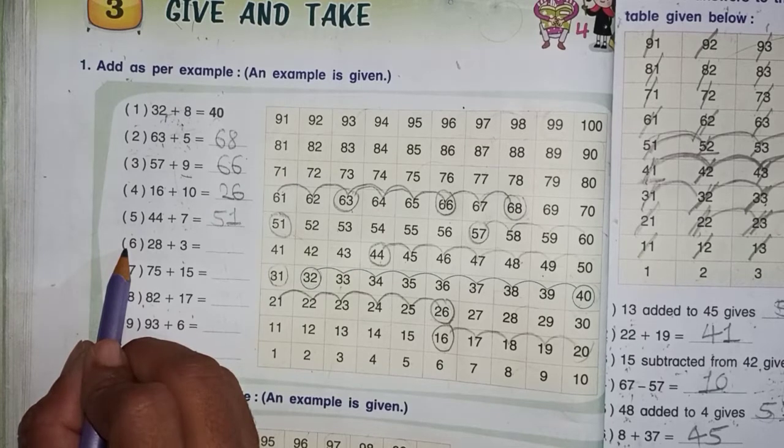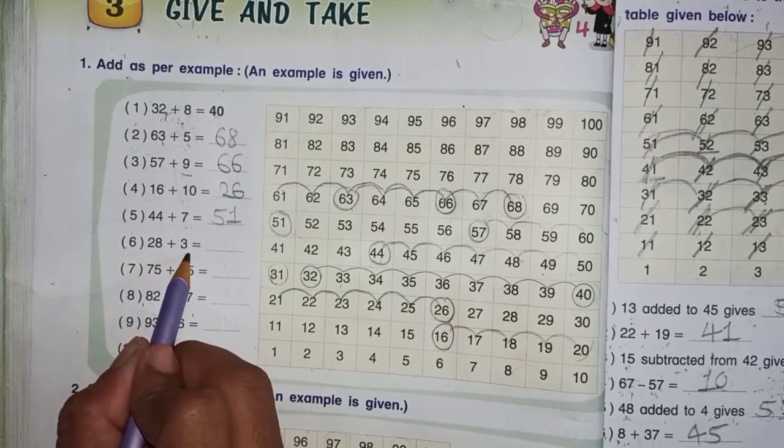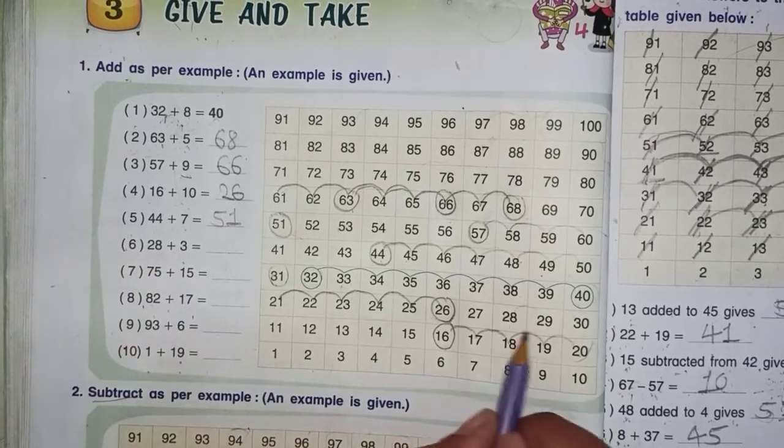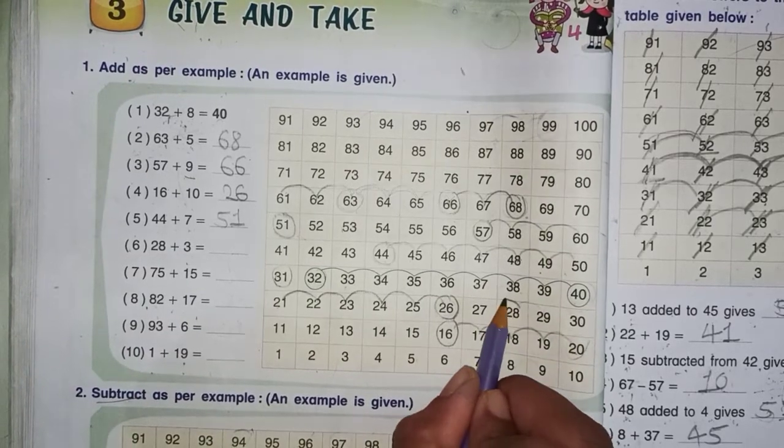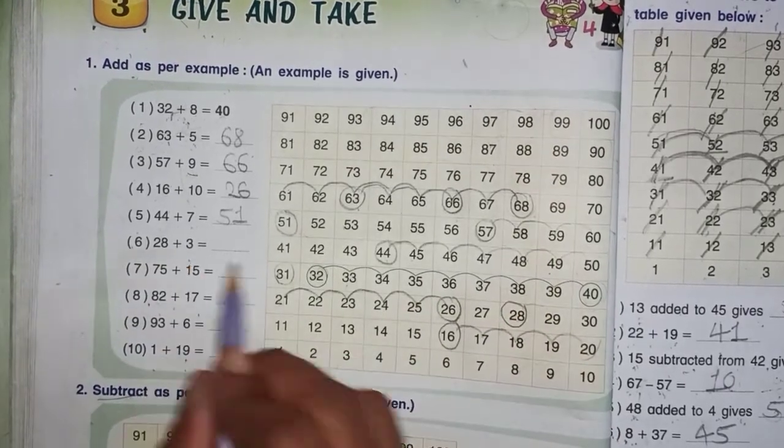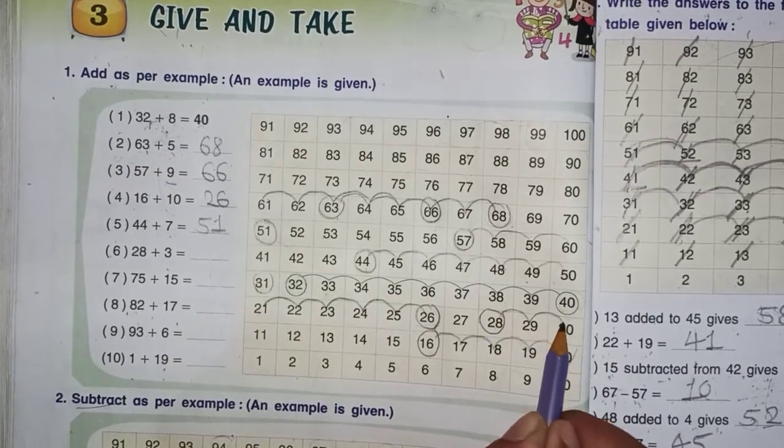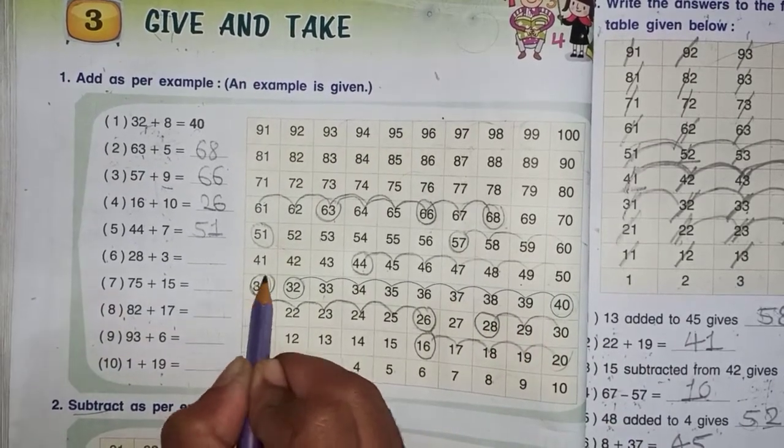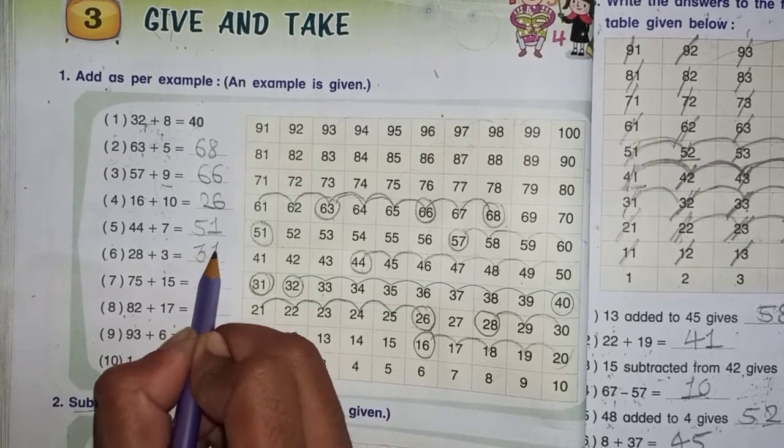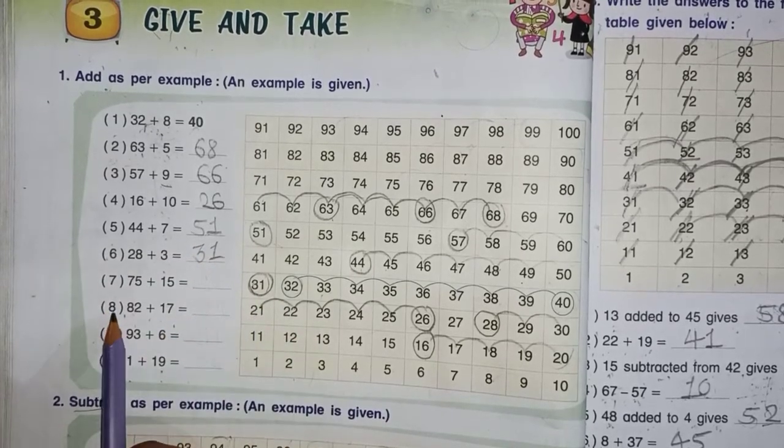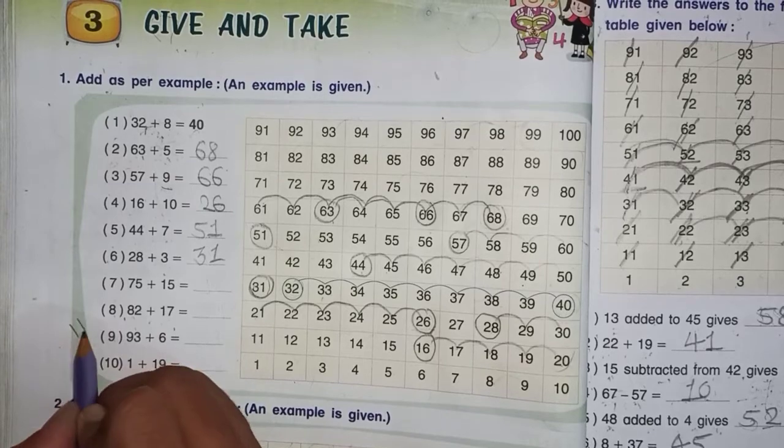Number 6, 28 plus 3. 28 is where? This is where we go. How many add? 3 to add. Count 1, 2, and 3. So our answer is 31. You can do 7, 8, 9, 10 as homework.